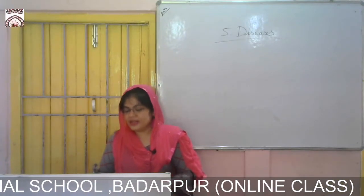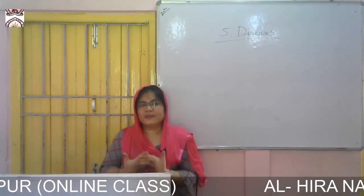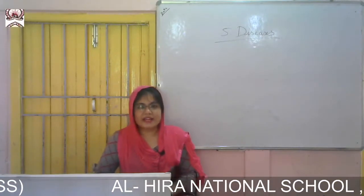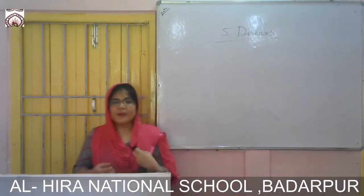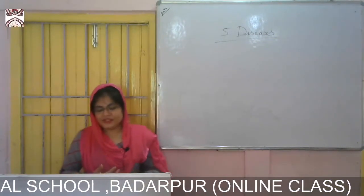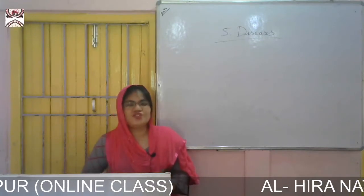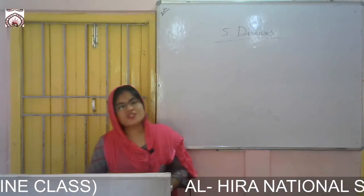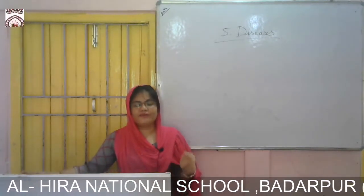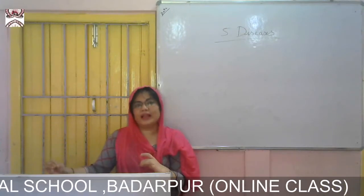Iron is a mineral the body needs to make blood. We get iron from leafy vegetables, cereals, meat, eggs, and dates. Iron deficiency can lead to anemia — a disease caused by a lack of iron in the body, which means the body cannot produce enough blood.